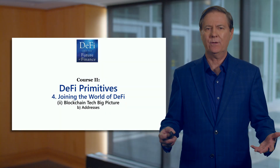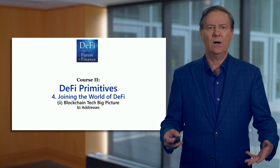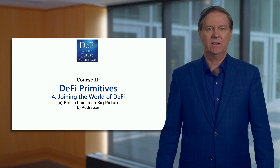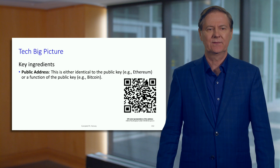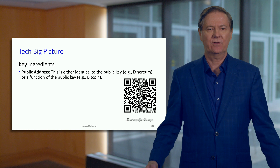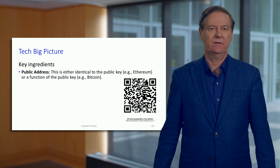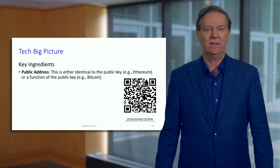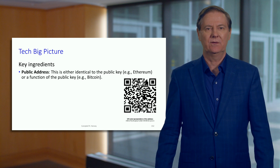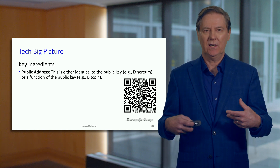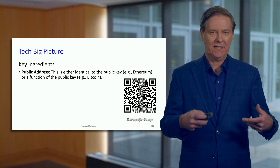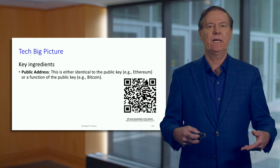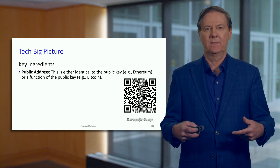We've talked about addresses. By now, hopefully you've set up a MetaMask wallet and you've got an address. We need to understand where that address is actually coming from. A public address is basically derived from your private key — a random number that goes through an elliptic curve algorithm to derive a public key, which is then manipulated to produce the public address.